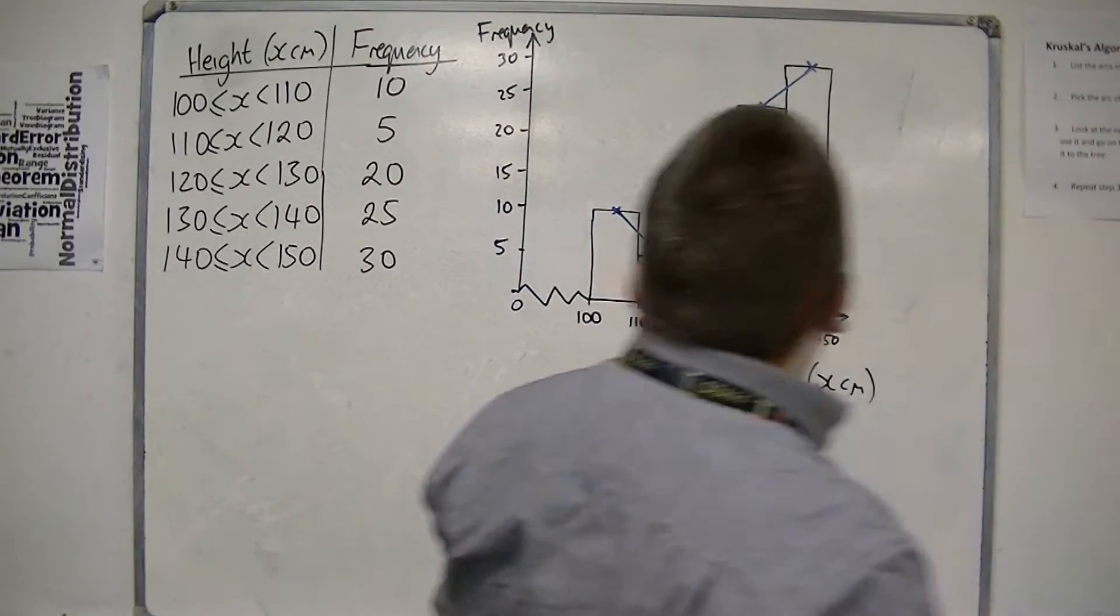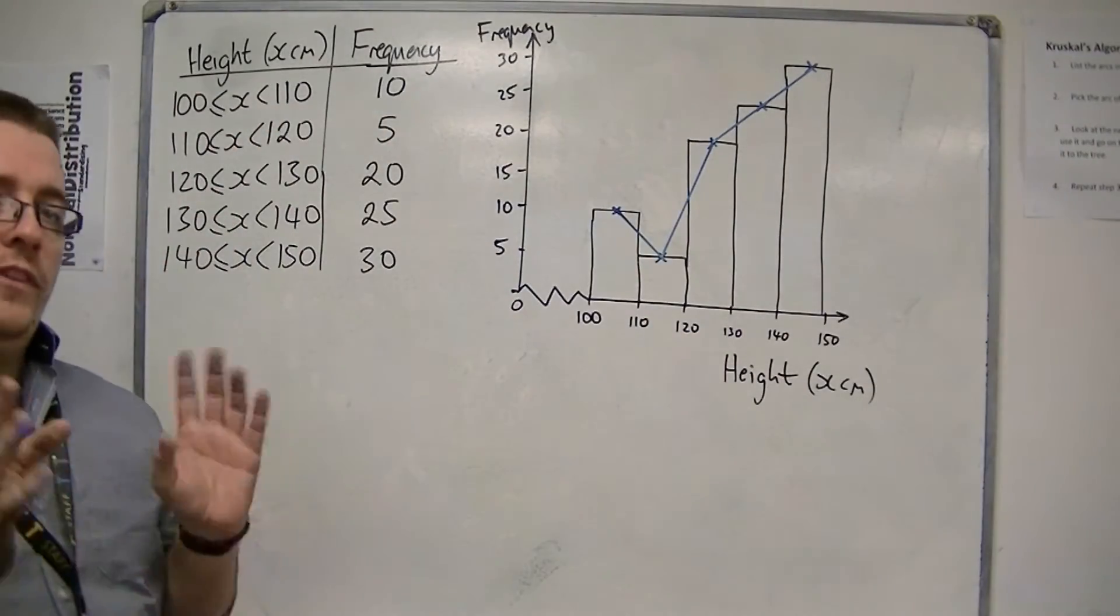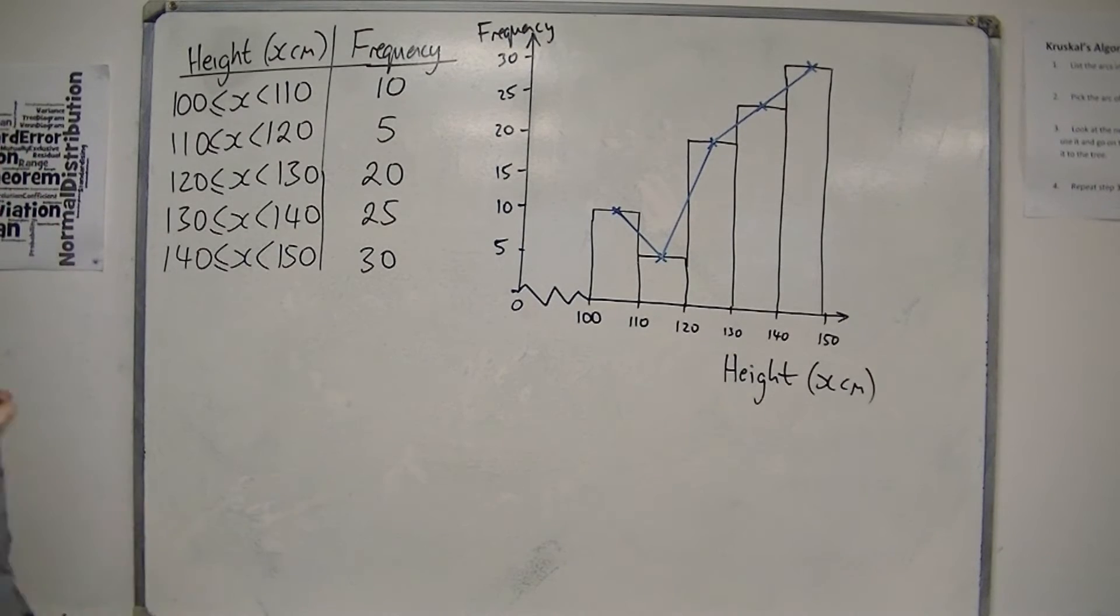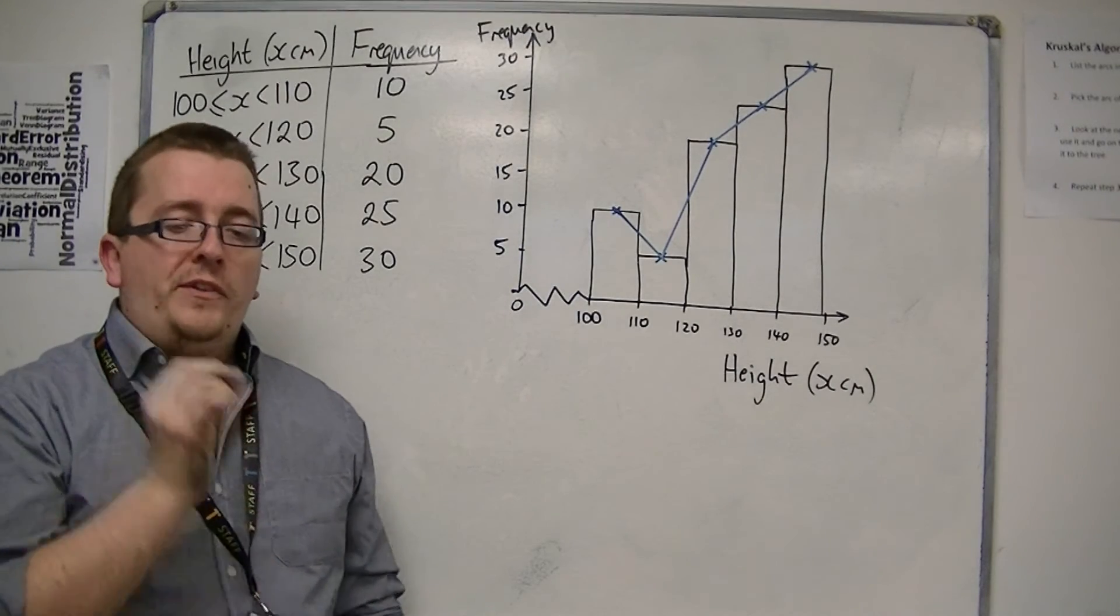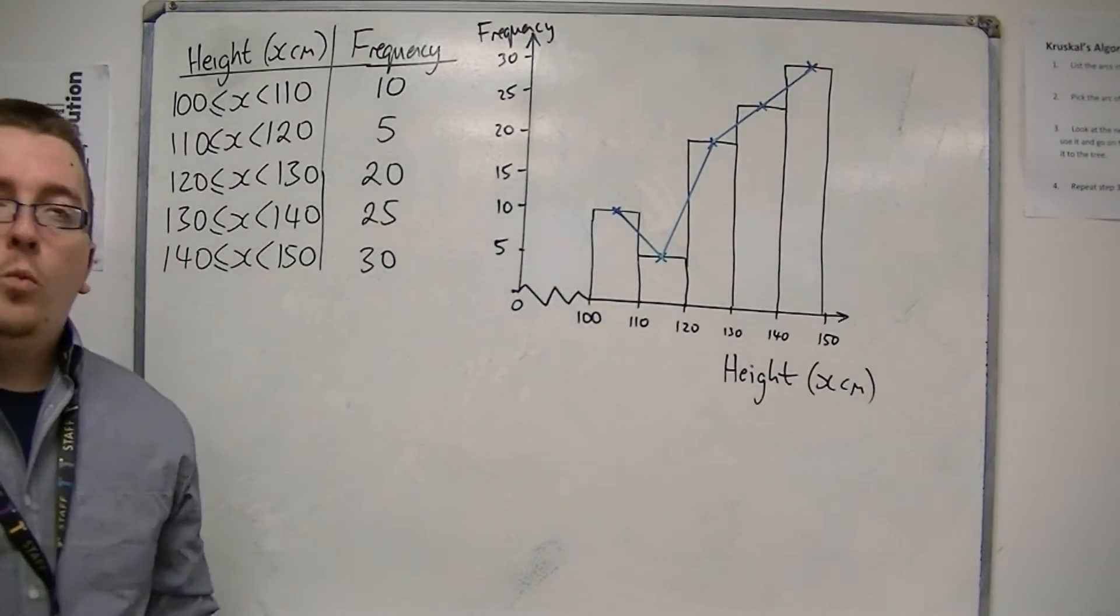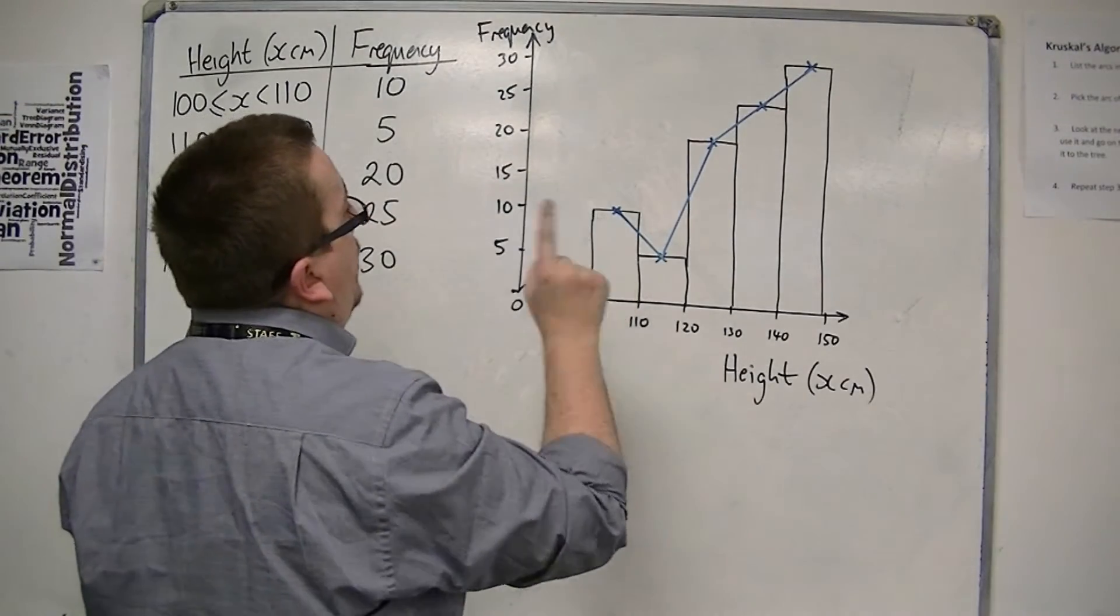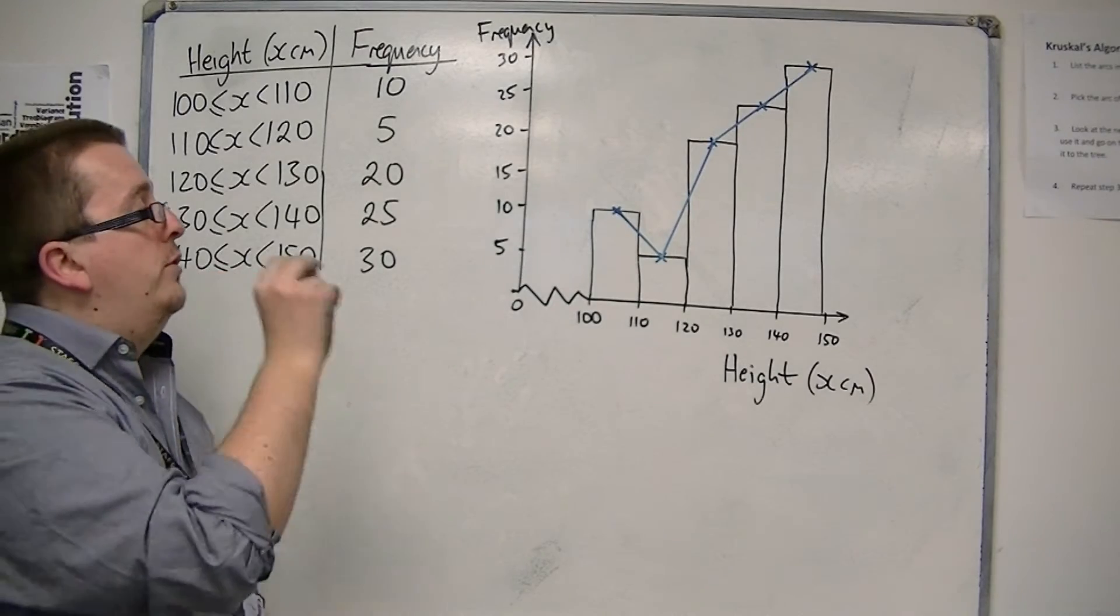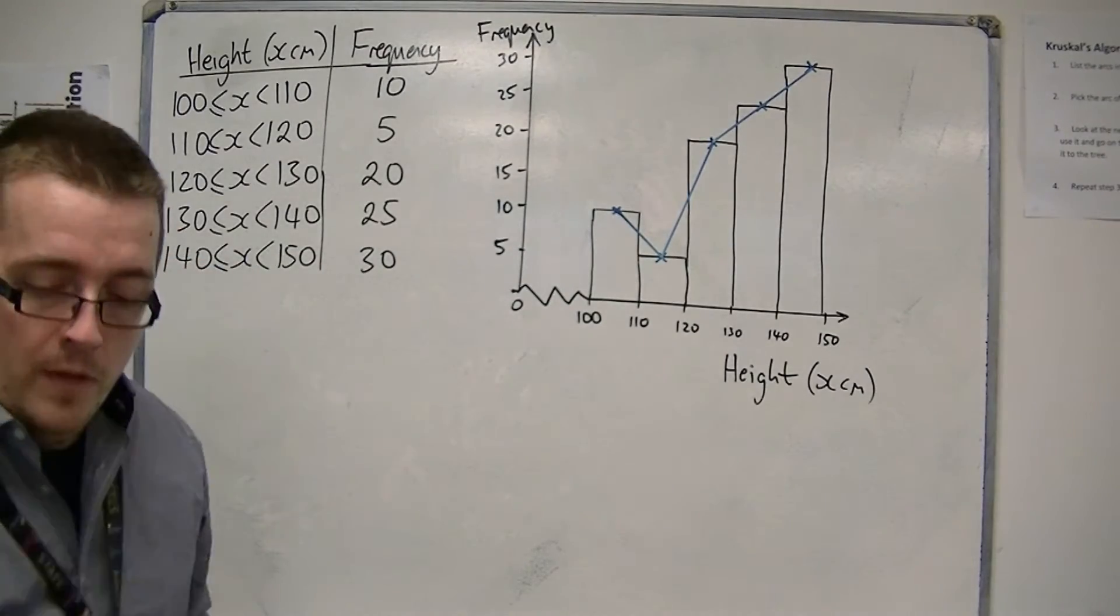It's the line that has been drawn that is the frequency polygon. Really, you need to be able to draw this without the bars actually being there. But I wanted to make sure that I drew the polygon over the top of the bars to show you how they are linked. The points go through the midpoints. So if you are asked to draw a frequency polygon rather than a frequency diagram, we don't want the bars to be there.